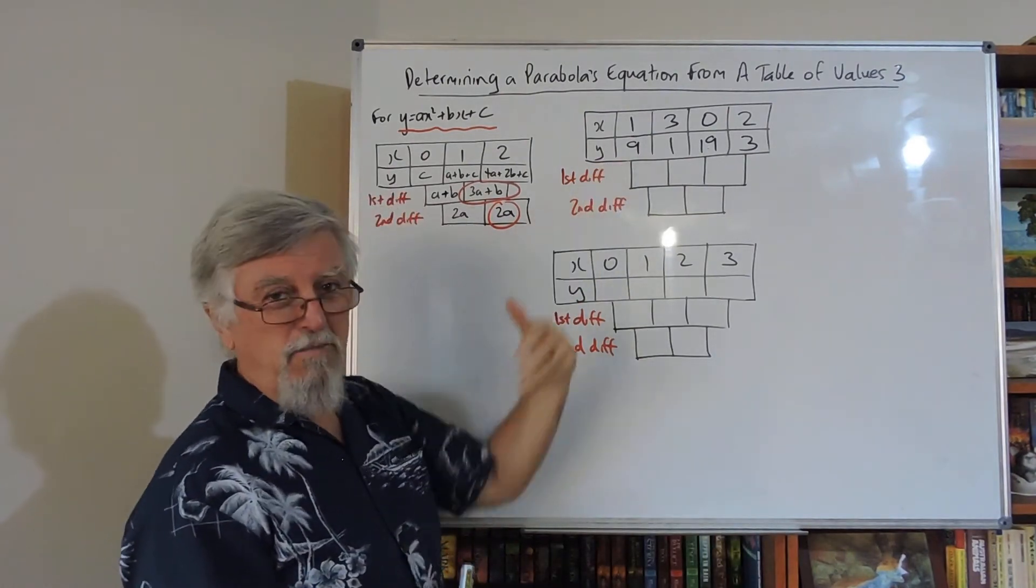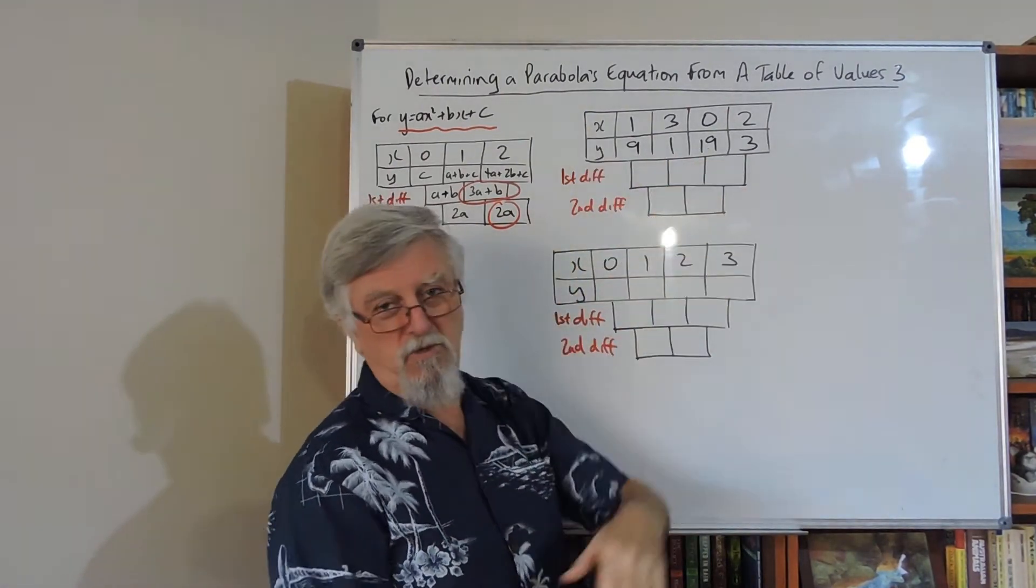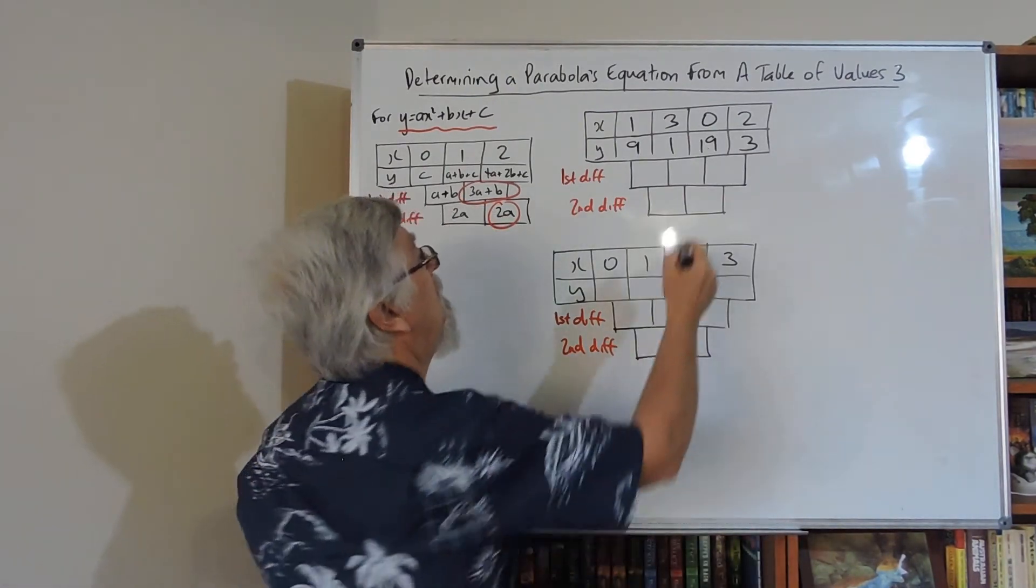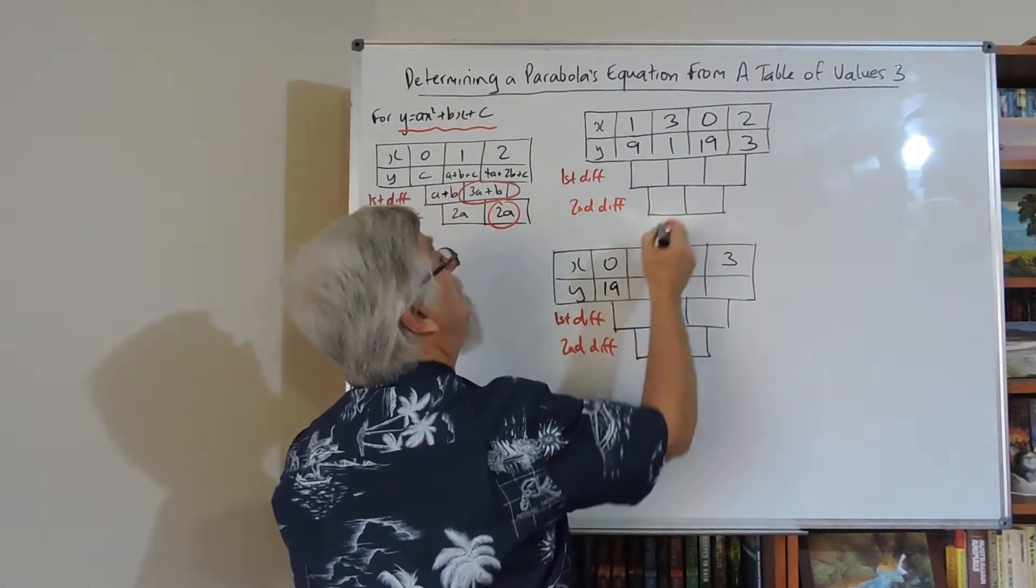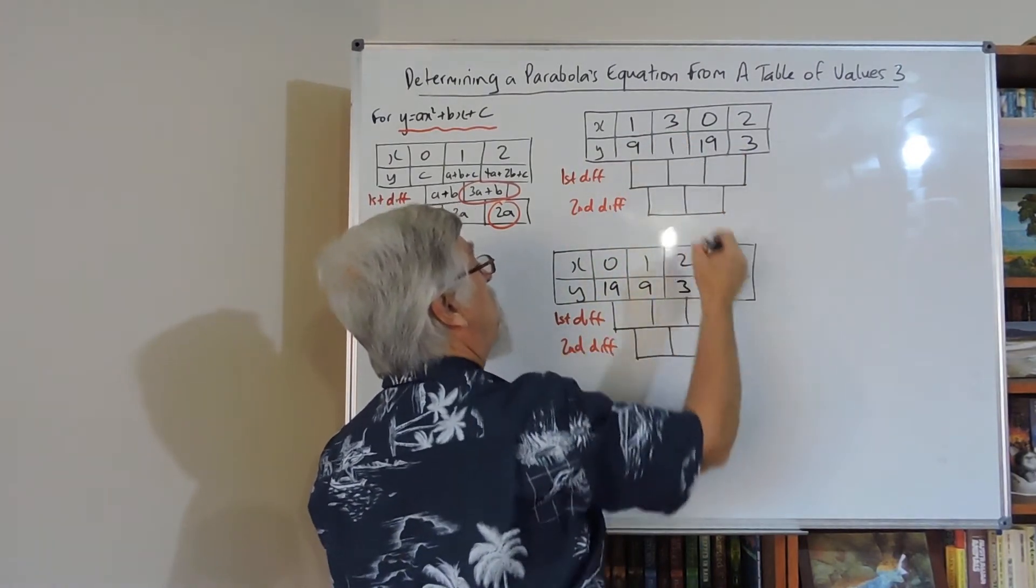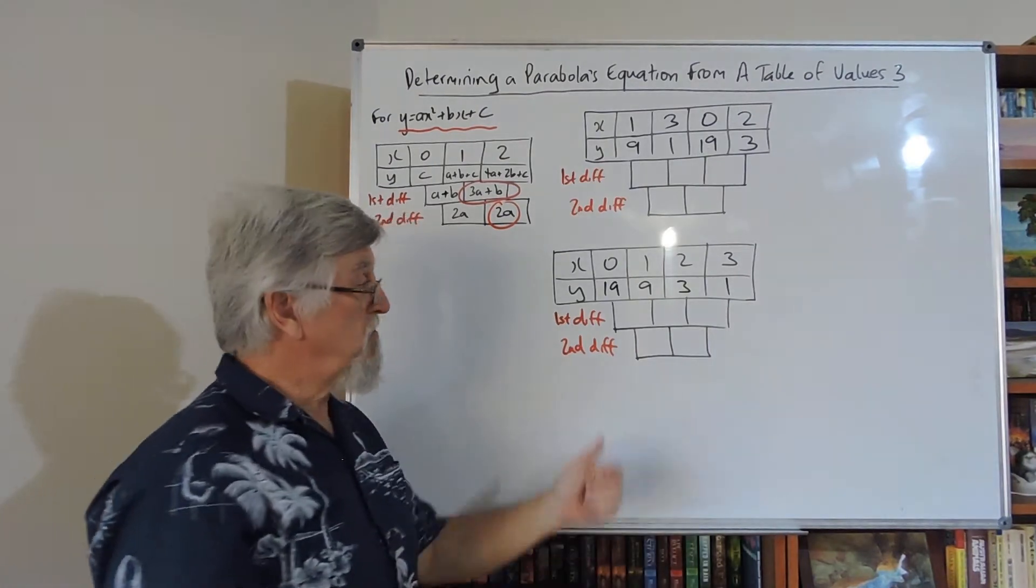What do we do as a teacher to muck people up? We change the order around. So you've got to change the order back before you can do the question. So the 0 has the 19, the 1 has the 9, the 2 has the 3, and the 3 has the 1. And it's not a straight line.